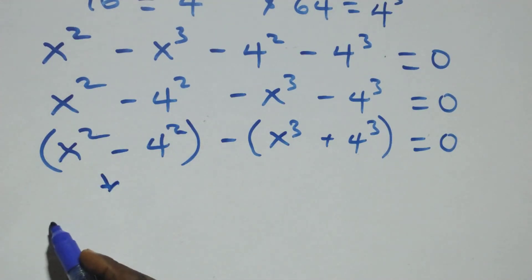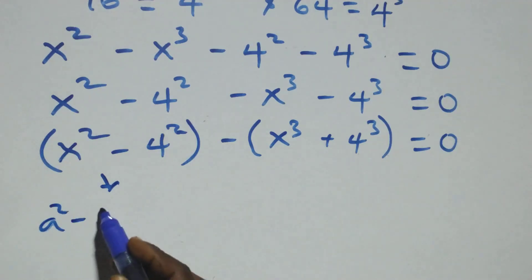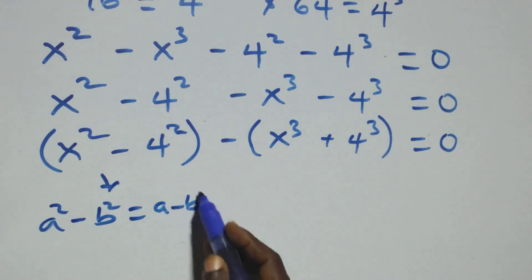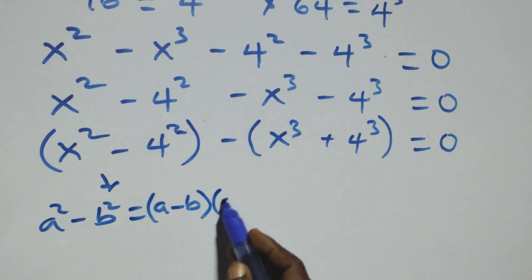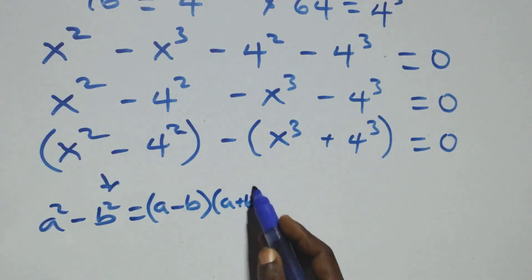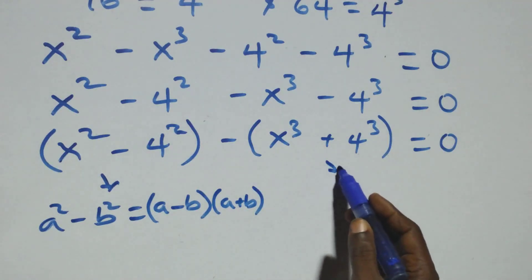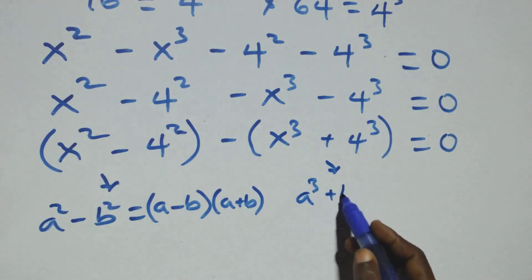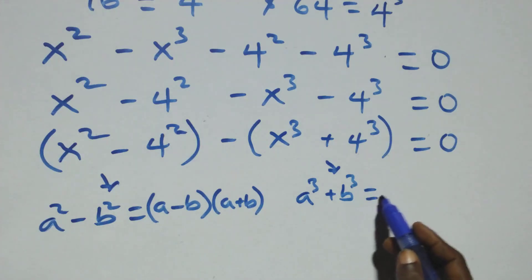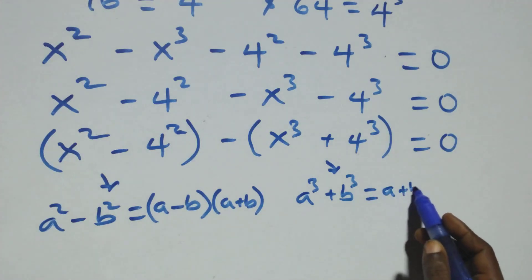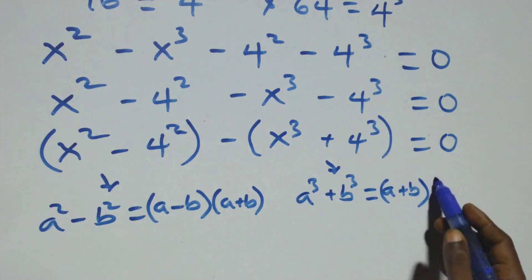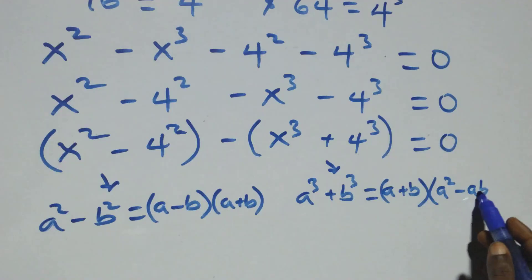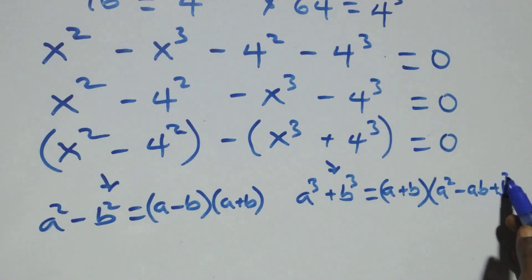For the first bracket, this follows the identity a squared minus b squared, which we express as bracket a minus b times bracket a plus b. For the second bracket, this follows the identity a cubed plus b cubed, which we express as bracket a plus b times bracket a squared minus ab plus b squared.